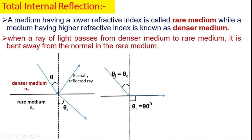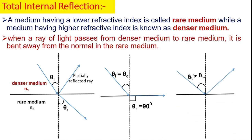If we increase the angle of incidence theta i such that it equals a certain value theta c, then in this condition the angle of reflection is equal to 90 degrees. In this condition, the angle of incidence is called the critical angle. That means the critical angle is the value of the angle of incidence for which the angle of reflection is 90 degrees. If theta i is greater than theta c, then the light ray is totally reflected back into the denser medium and does not pass into the rarer medium. This condition is called total internal reflection.